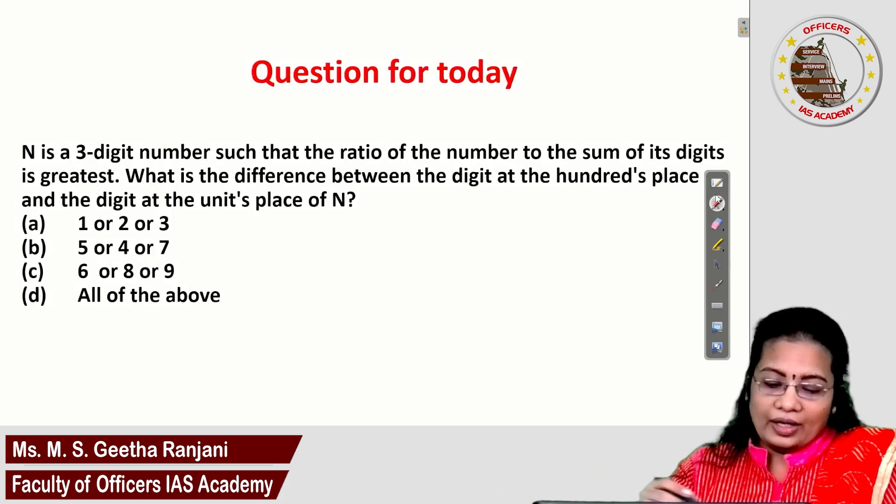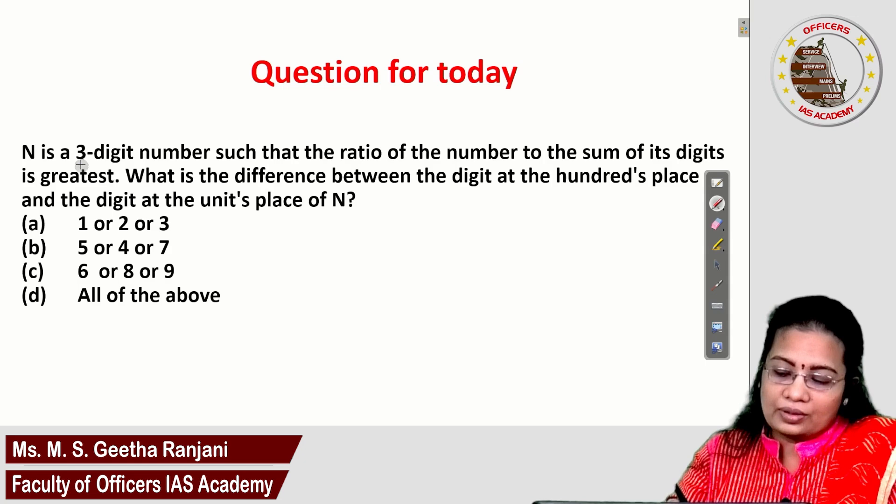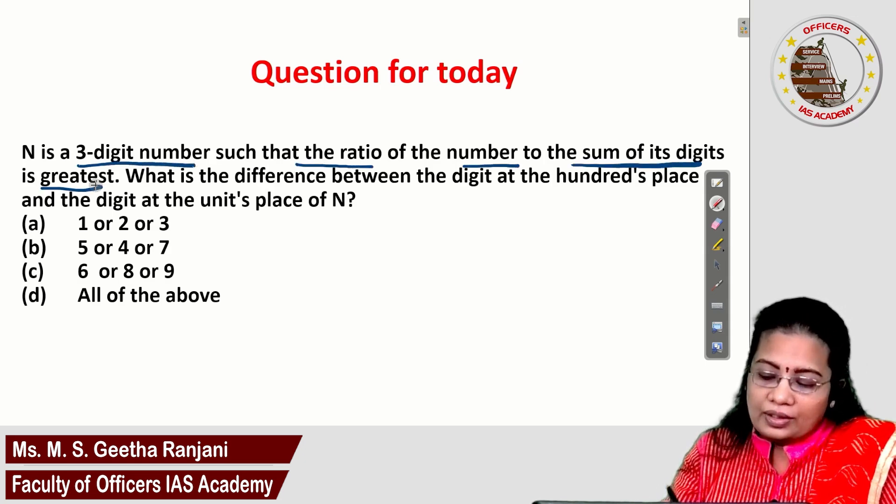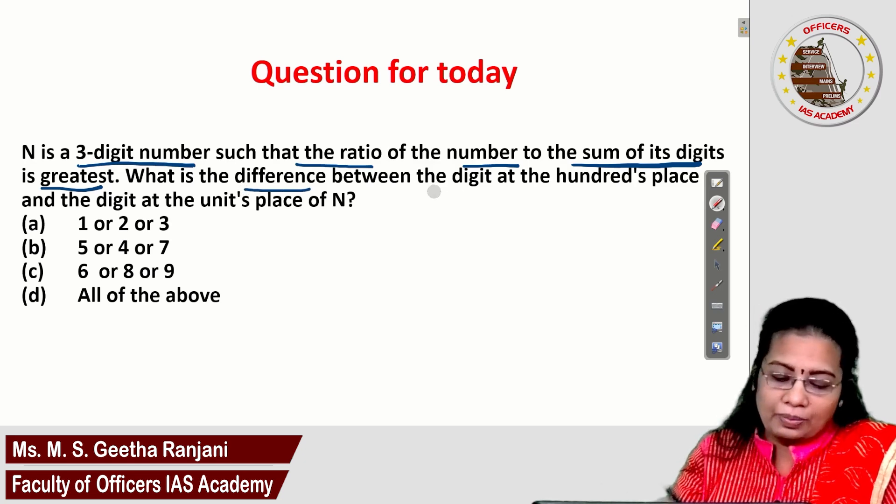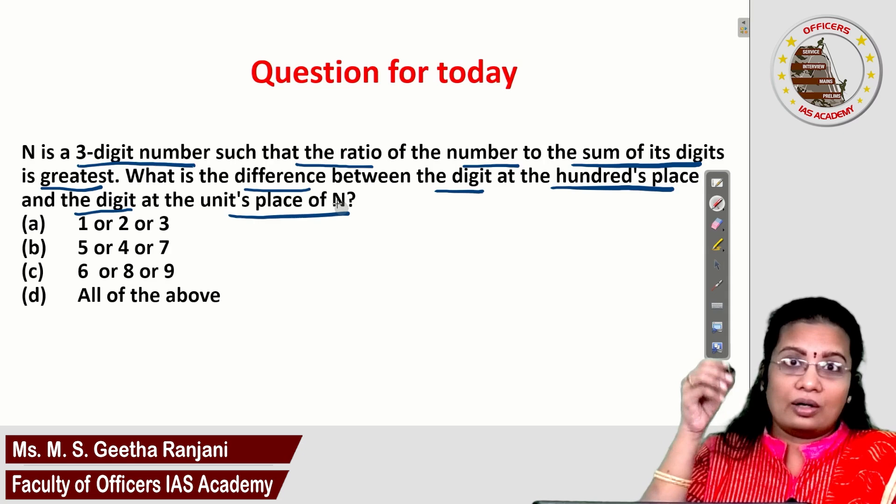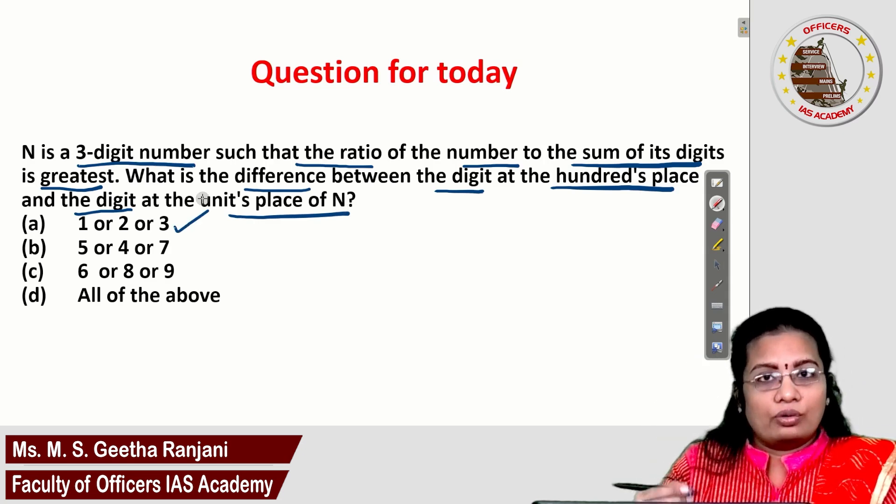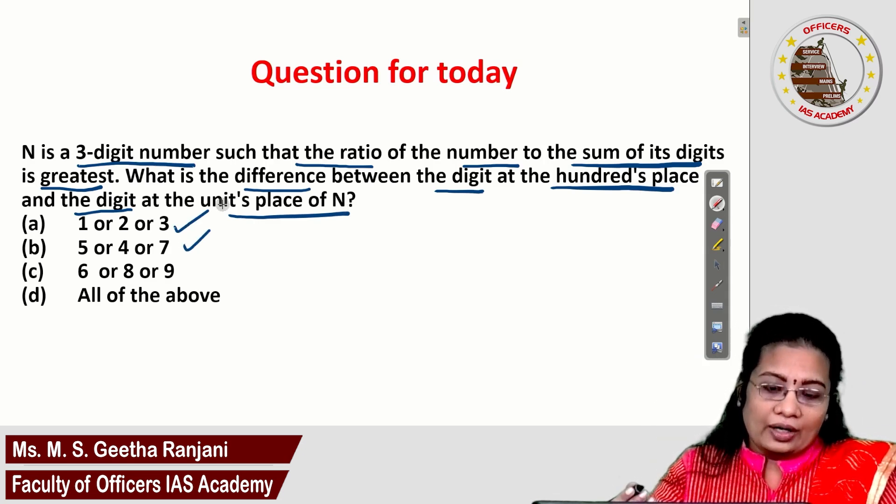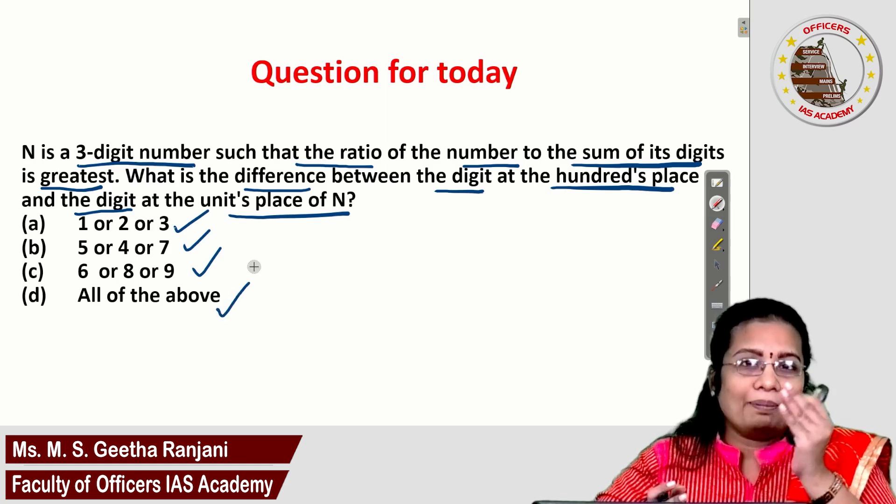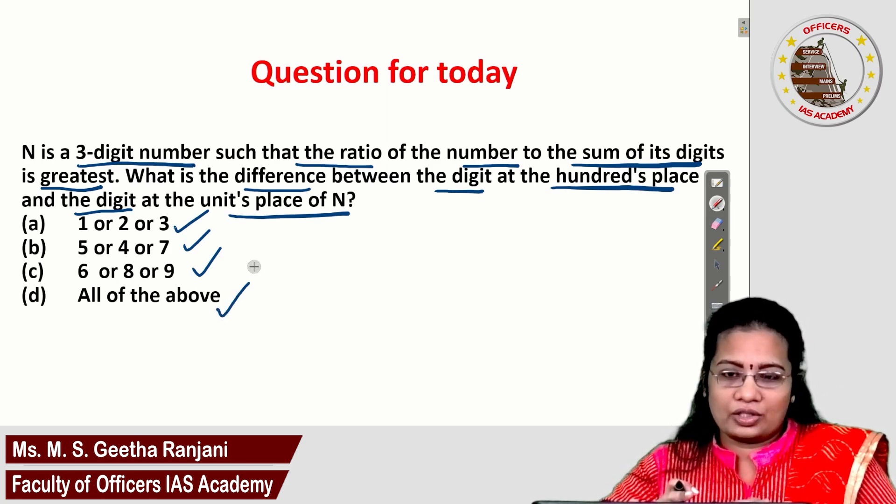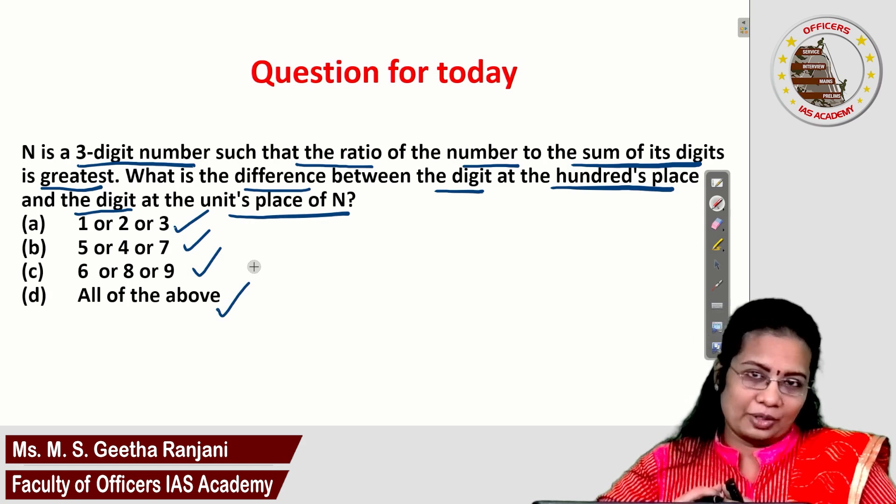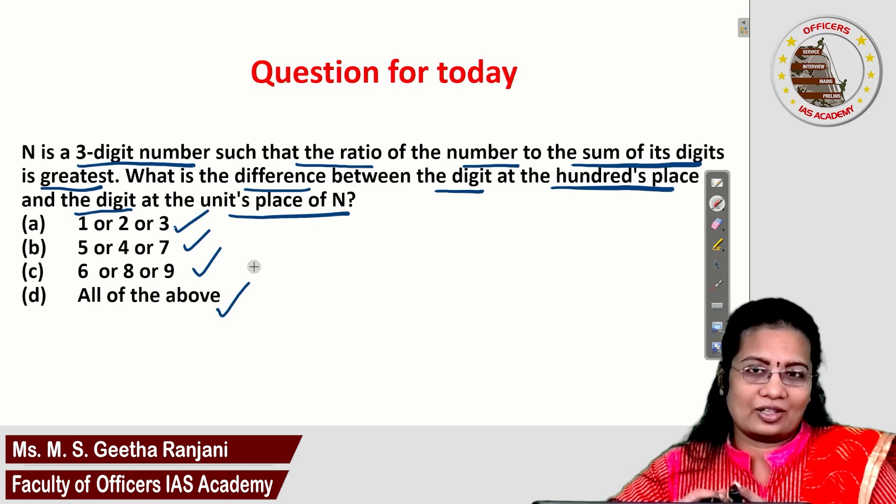Question for today: N is a 3-digit number such that the ratio of the number to the sum of its digit is greatest. What is the difference between the digit at the 100's place and the digit at the unit's place of N? Your options are 1 or 2 or 3, 5 or 4 or 7, 6 or 8 or 9, or all of the above. You want to choose the correct answer based on the previous question. Post your answer in the comment section. Meet you in the next section. Thanks for watching.